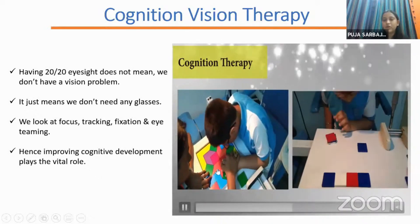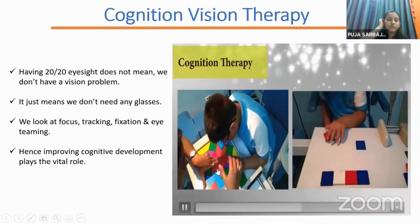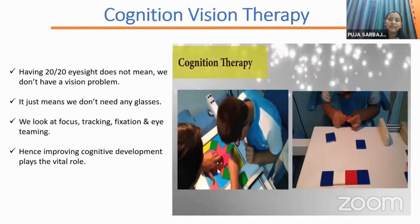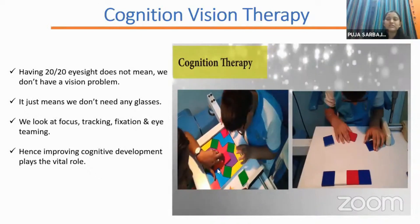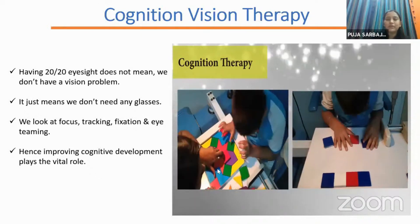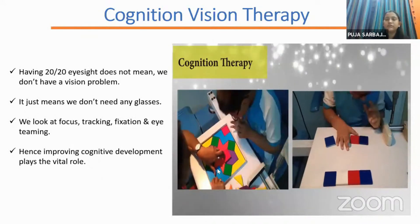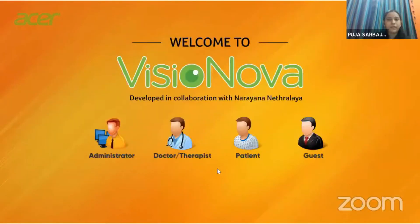One activity is parquetry blocks — there are different levels in the parquetry block book, starting from basic level one and progressing. We also use the Lea Cone Adaptation Test as a block game to provide cognitive visual therapy.